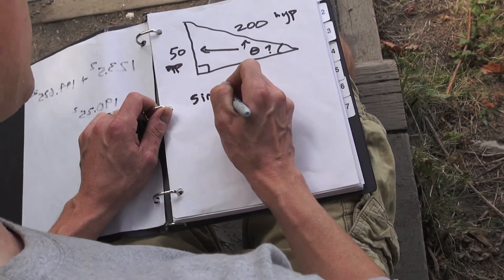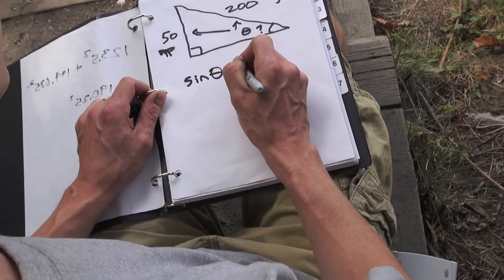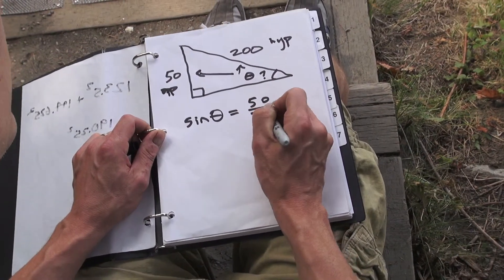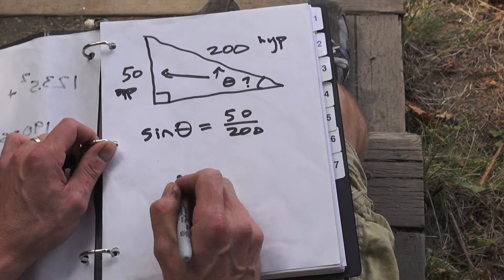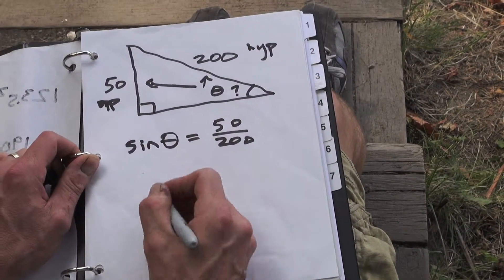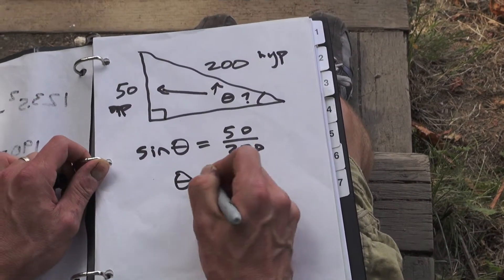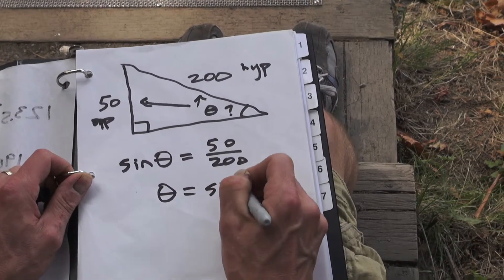So we can write a little trig equation here. We're going to use sine because that's opposite over hypotenuse. Sine of that angle is 50 over 200, or in other words we could make that 1 over 4, but we'll leave it like that for now. To find the angle and solve this trig equation, we're going to use sine inverse.